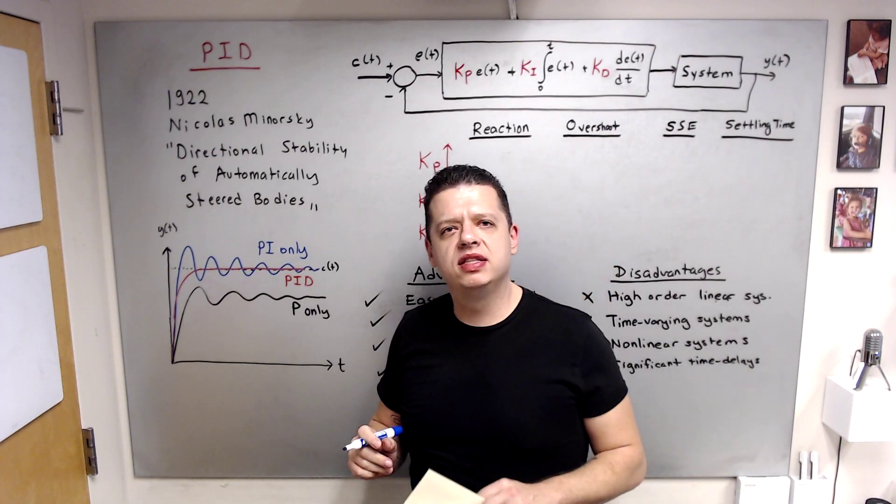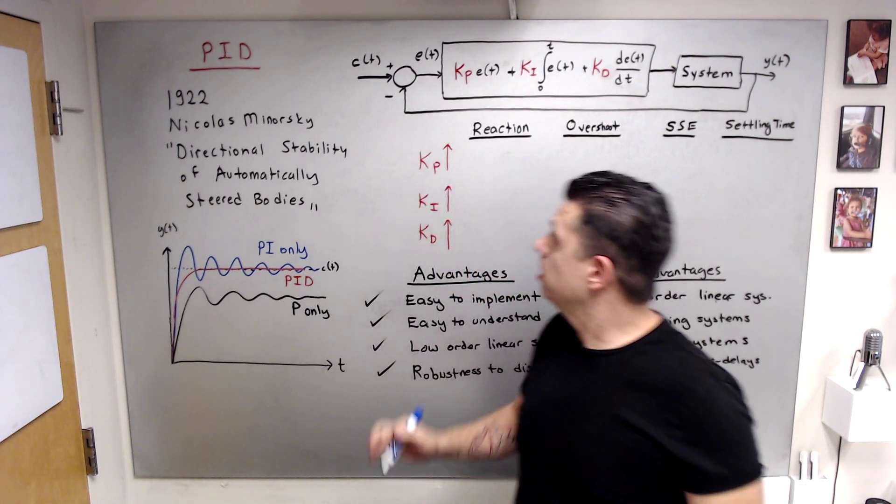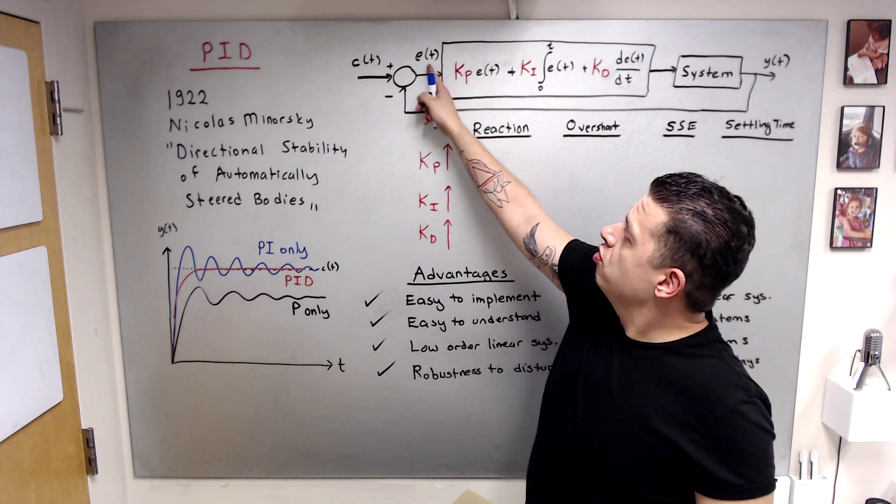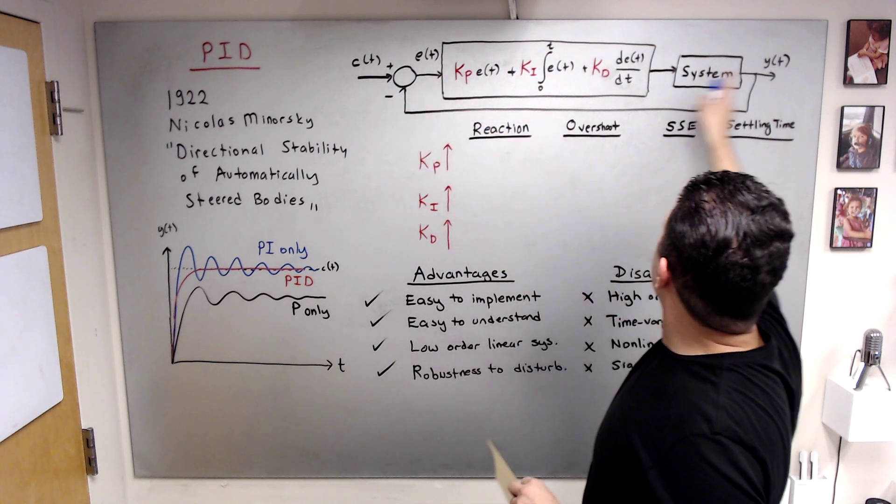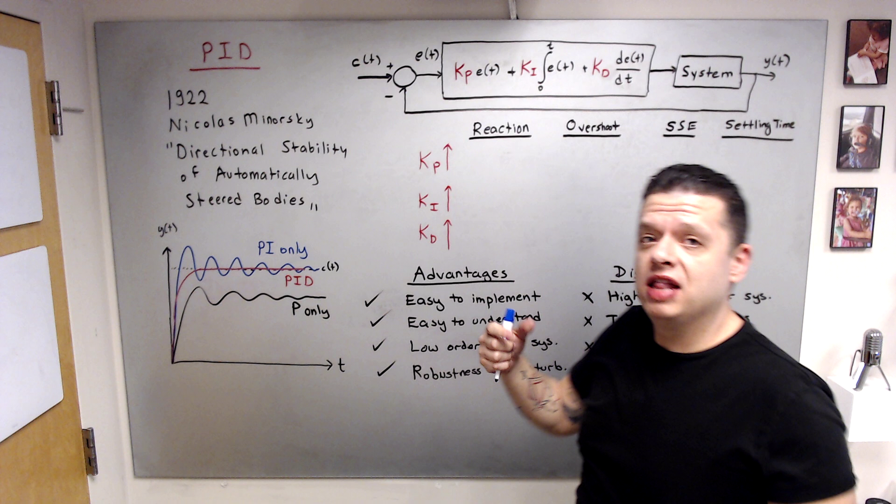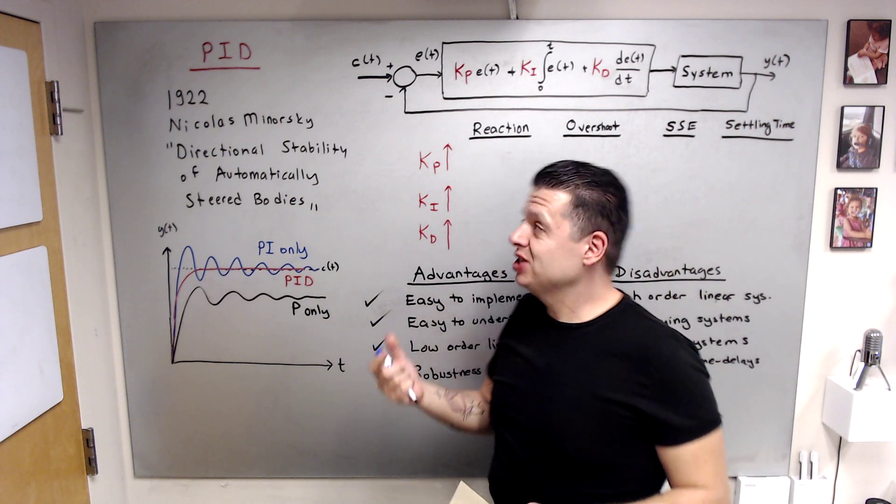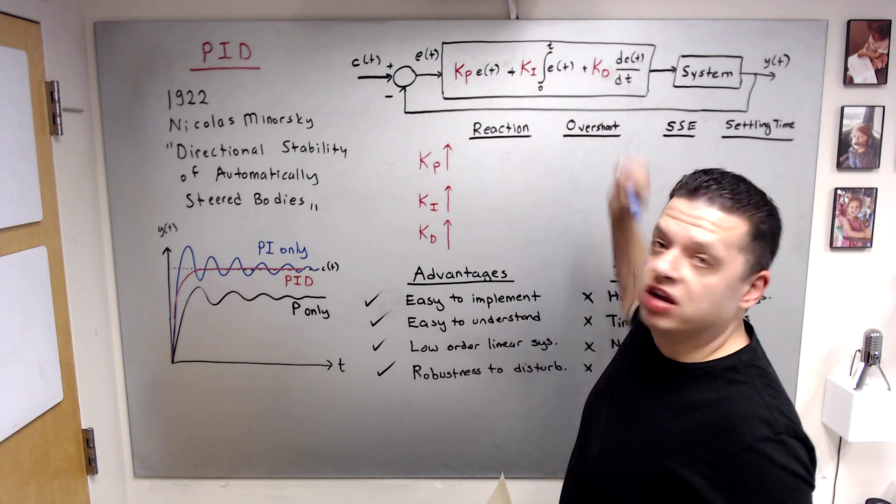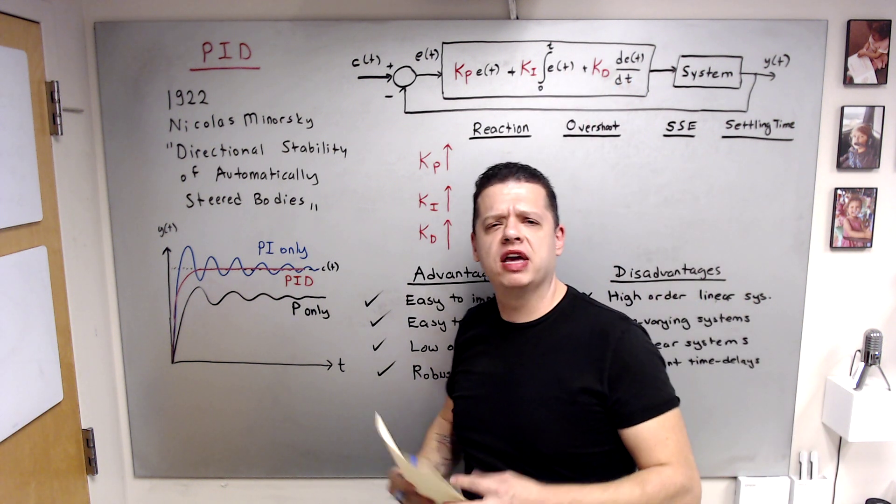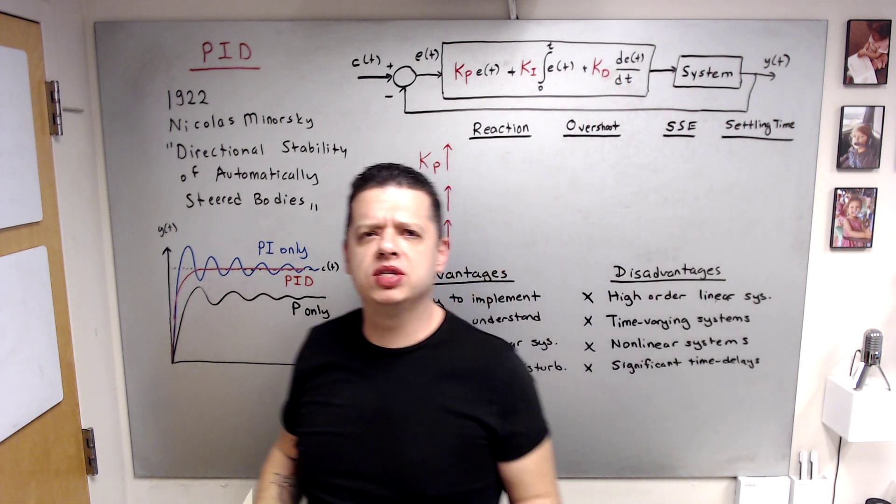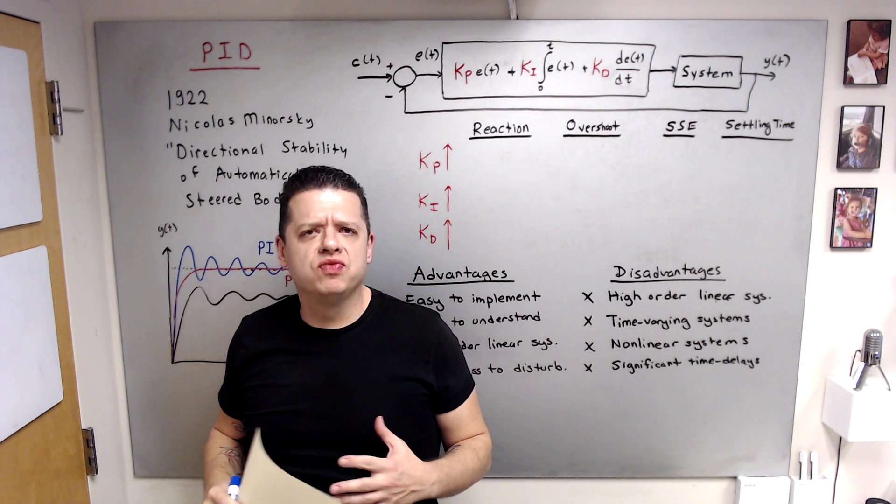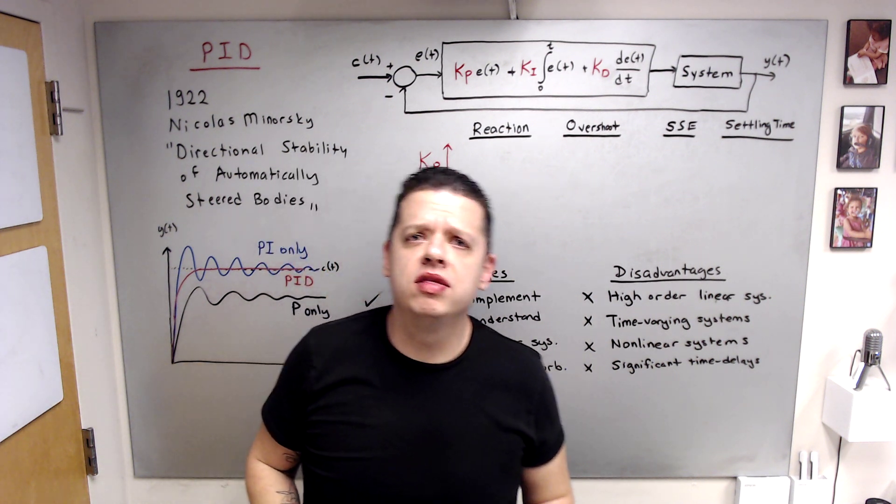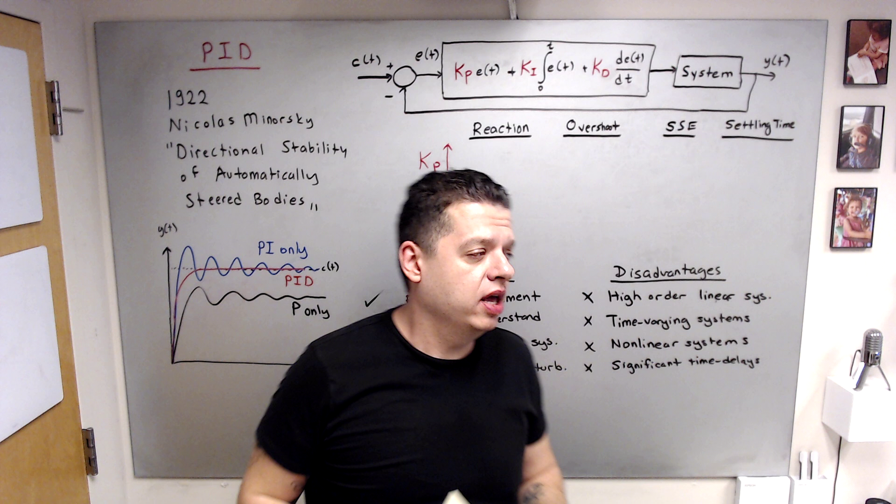In that paper he described the control architecture that is a function of error between the command and the system output, and that control architecture has the proportional term, integral term, and the derivative term. And then it became famous, and right now PID is one of the standards in industry and used in many applications.